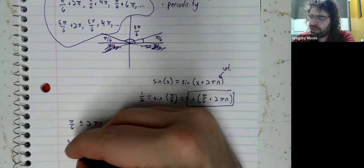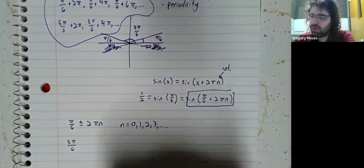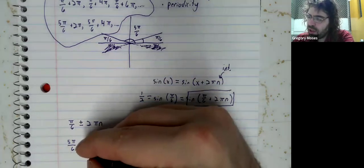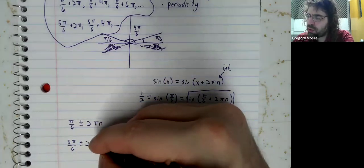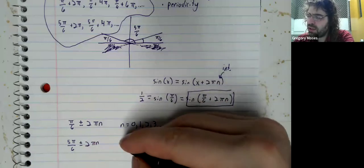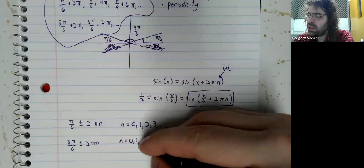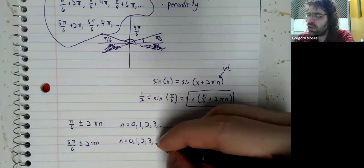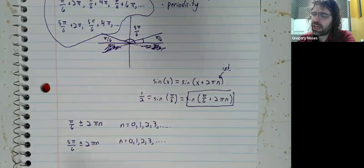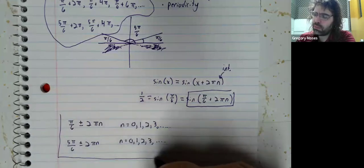And there are 5 pi over six plus 2 pi n, again where n can be any natural number.